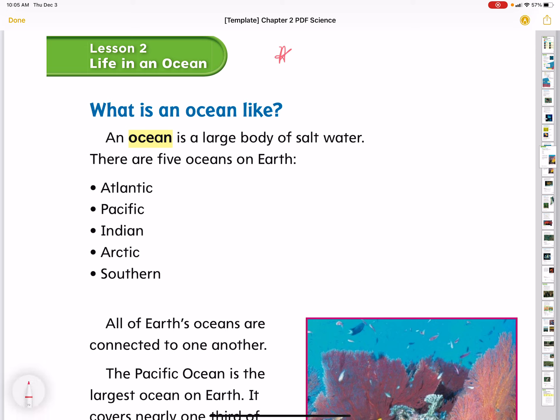What is an ocean like? An ocean is a large body of salt water. There are five oceans on Earth: Atlantic, Pacific, Indian, Arctic, and Southern Oceans.